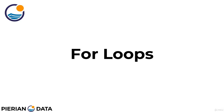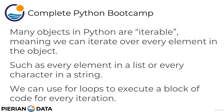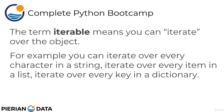In this lecture we're going to discuss for loops. Many objects in Python are iterable, meaning that we can iterate over every element in the object — such as every element in a list or every character in a string — and we can use for loops to execute a block of code for every iteration. The term 'iterable' means you can perform an action for every thing in the object. So a string is iterable because you can work through every character; a list is iterable; and a dictionary can also be iterated over.